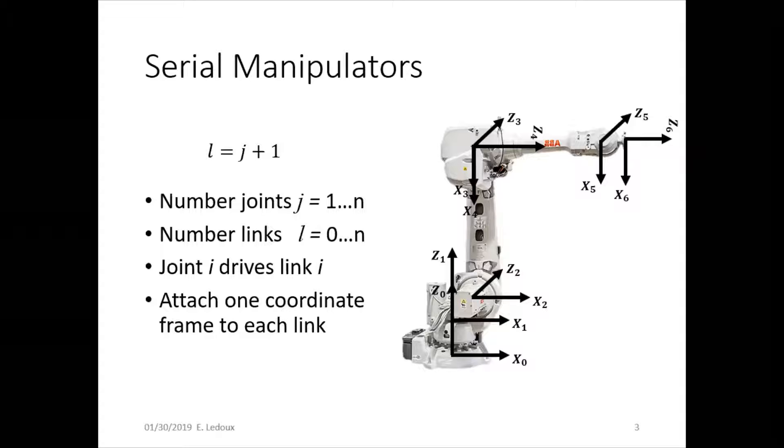The number of links is the number of joints plus one. That's because the ground, or the base, counts as link zero. So go through, number all of the joints, one to n.